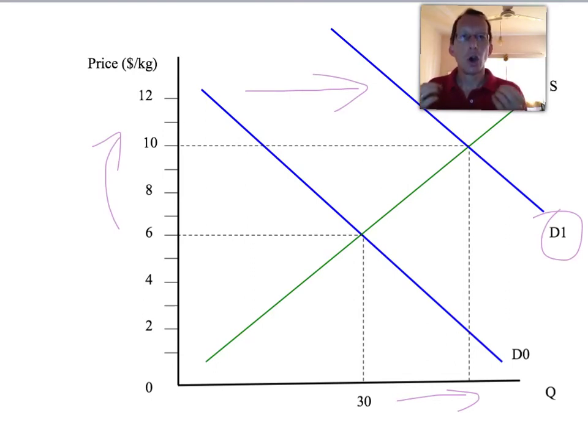At the old price of $6 per kilogram for apples, the supply of apples, the amount sellers wish to sell, is still fixed at 30 million kilograms per day. But demand has now increased. There is an excess demand for apples, and it's that excess demand that pushes the price up to reach the new price of, in our example, $10 per kilogram of apples.